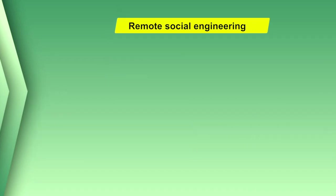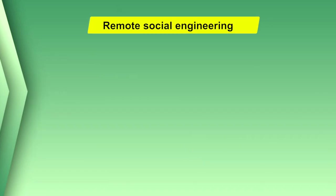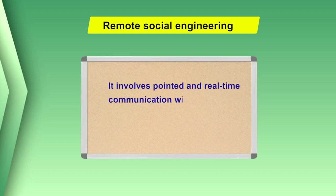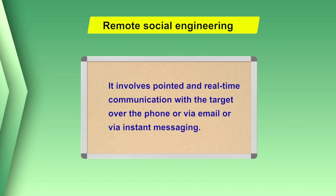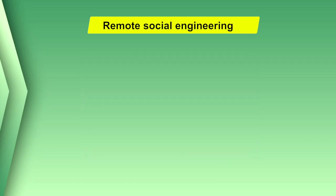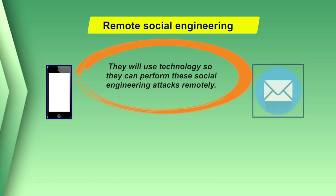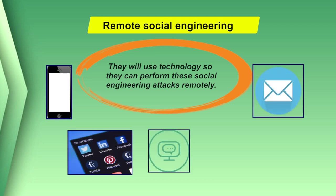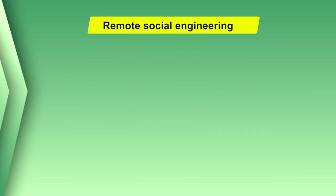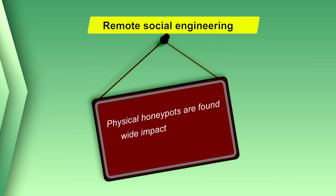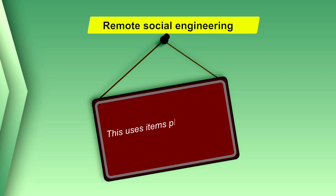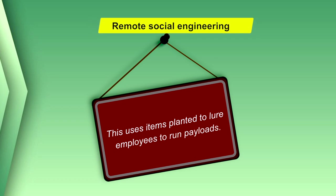The second type of social engineering is remote social engineering. Remote social engineering involves pointed and real-time communication with the target over the phone, via email, or via instant messaging. Attackers use technology to perform these attacks remotely, such as by phone, email, social media, instant messaging, and even from search engine results. Physical honeypots are also used with CDs and USB keys planted for employees to run payloads.